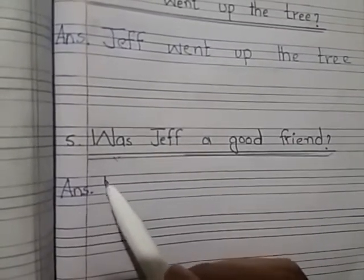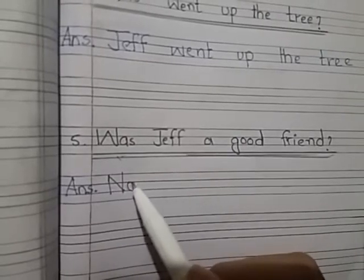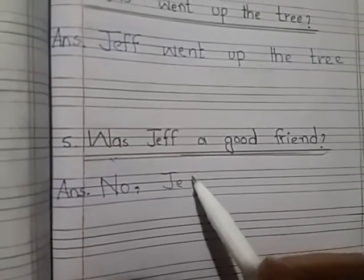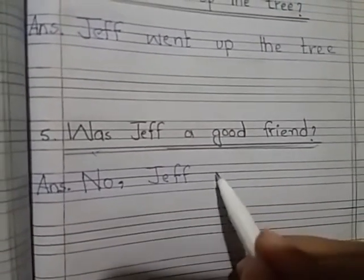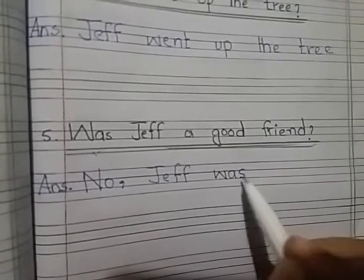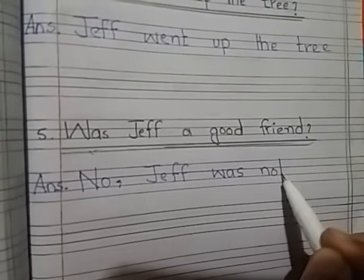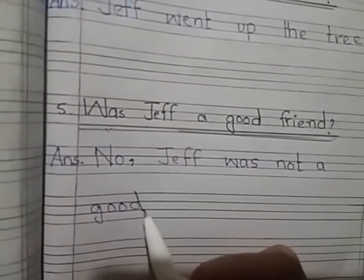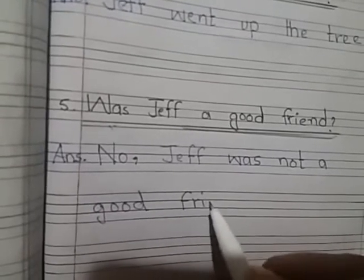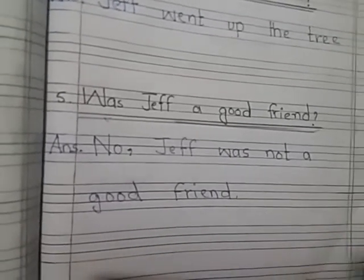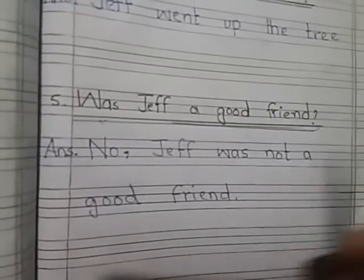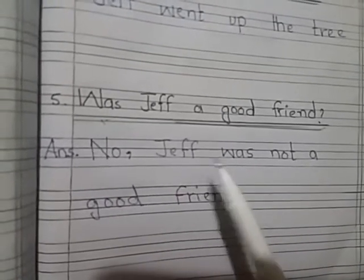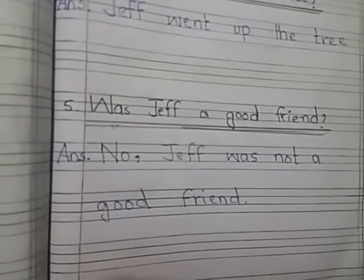Our answer will be: No, Jeff was not a good friend. N-O, no — then a comma. J-E-F-F, Jeff. W-A-S, was. N-O-T, not. A good friend. G-O-O-D, good. F-R-I-E-N-D, friend. No, Jeff was not a good friend.